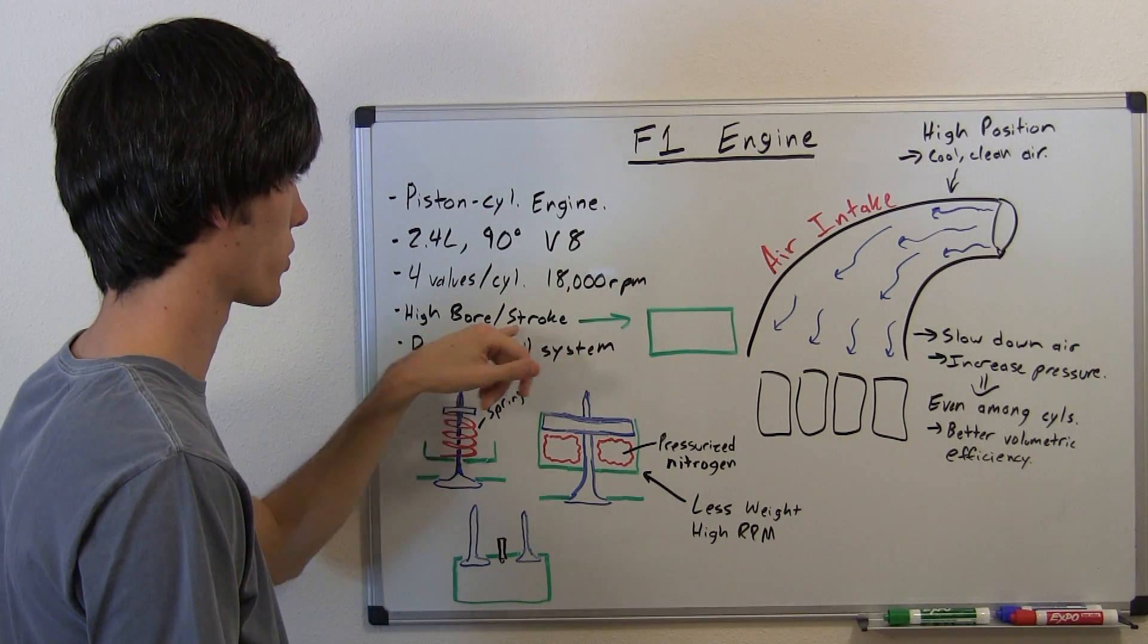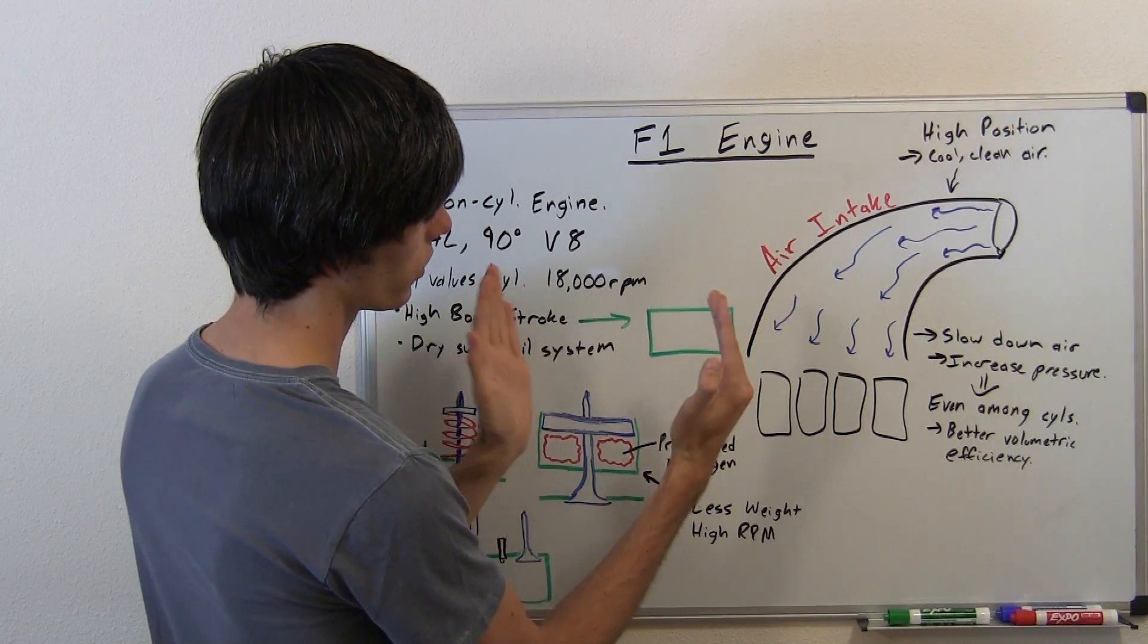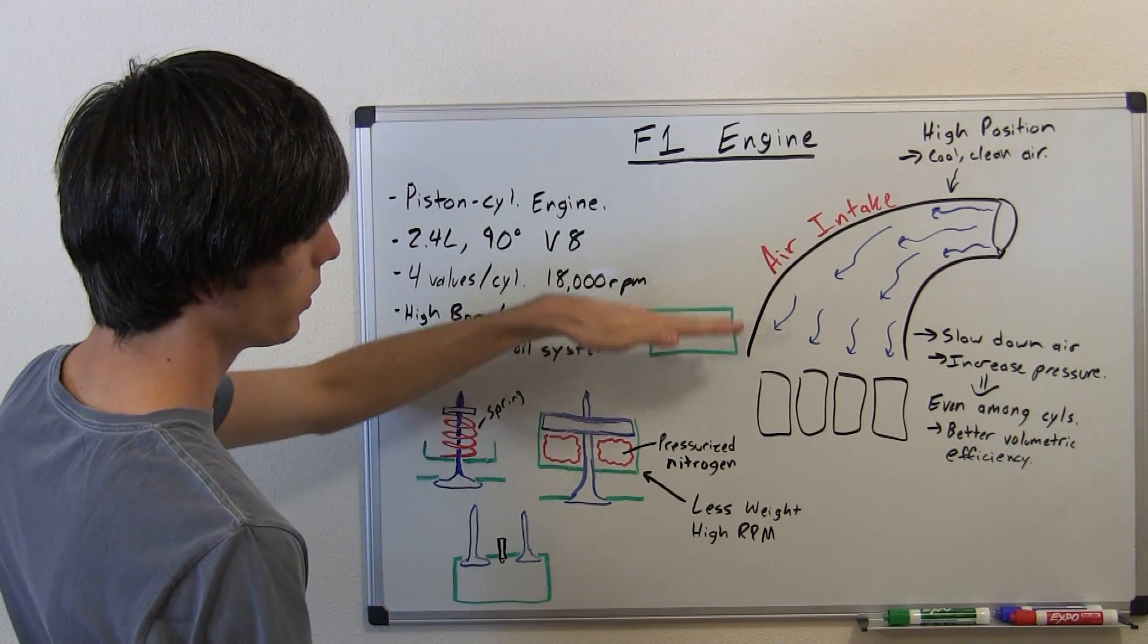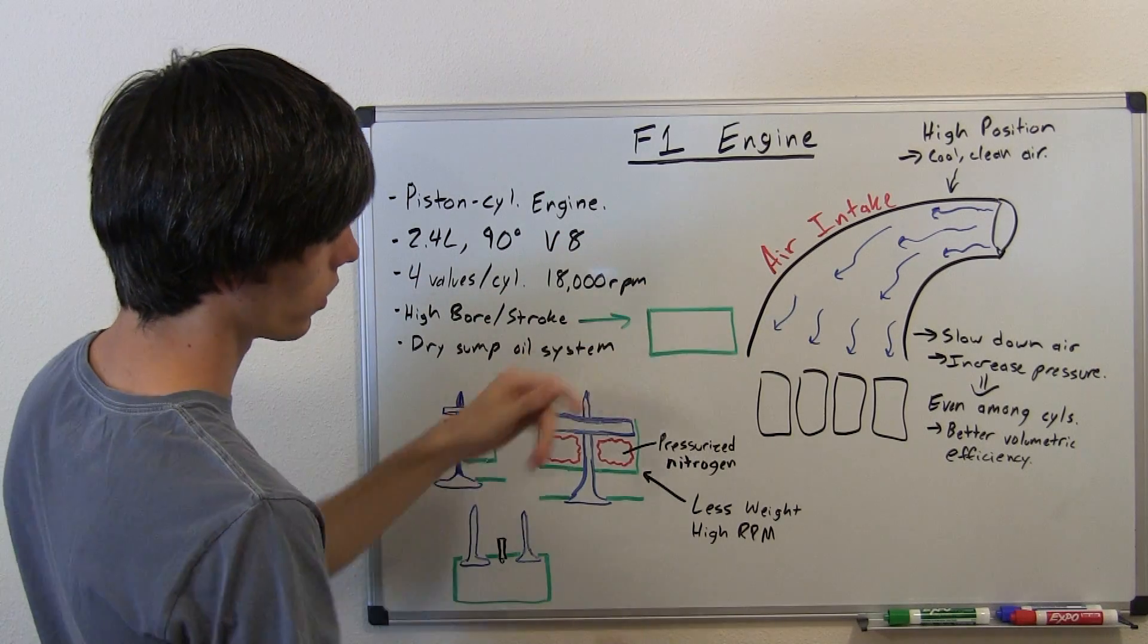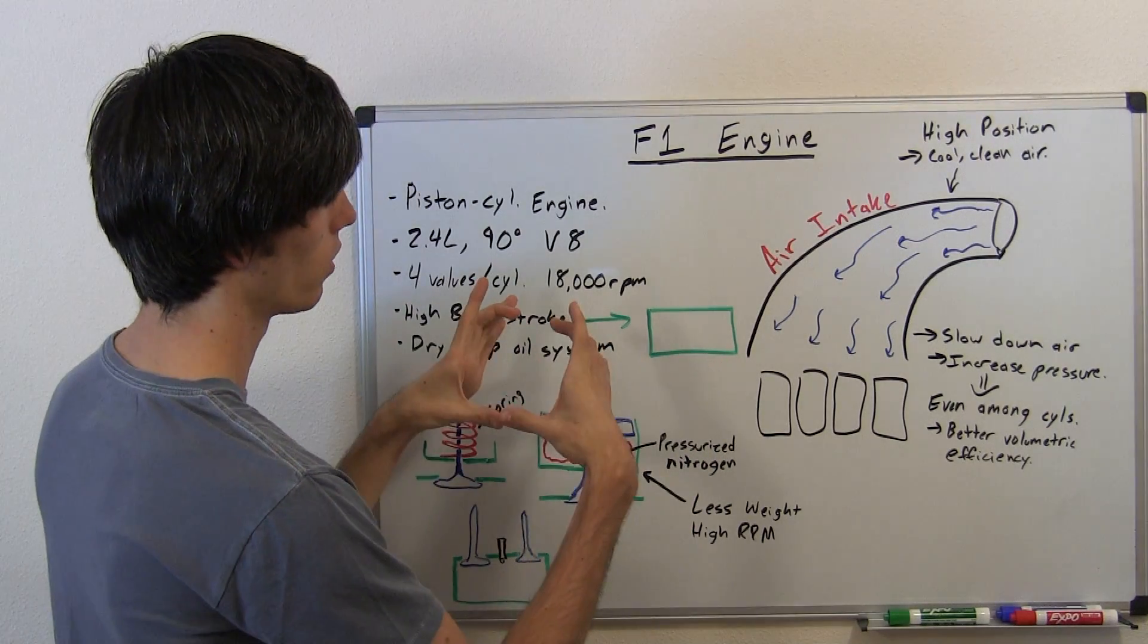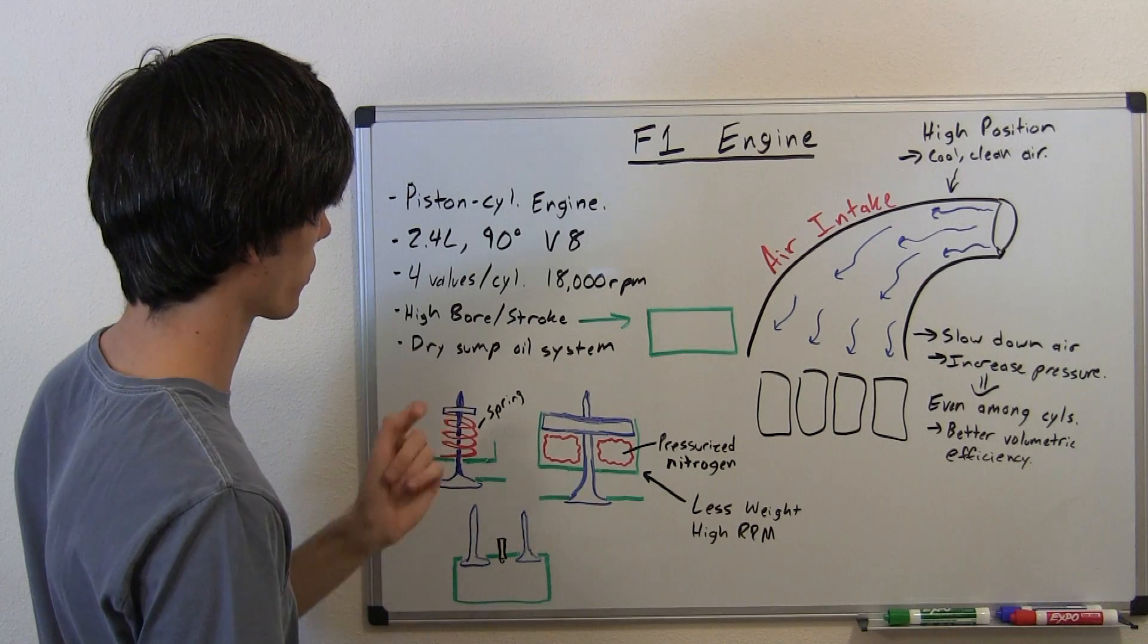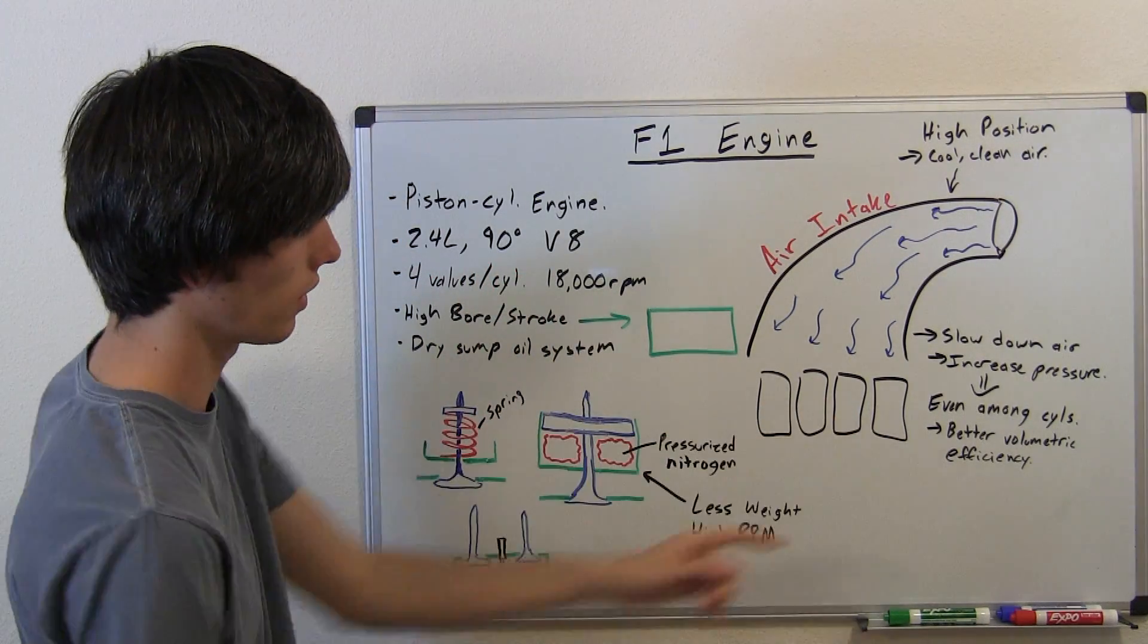So what enables a Formula One engine to rev to 18,000 RPM? Well it has to do with its bore to stroke ratio, which is very high, which means the cylinders are very wide and very shallow. So the piston doesn't have to move all that much between cycles per revolution. So in a typical car you may have a square bore stroke ratio or even a less than one bore to stroke ratio. So you kind of have something like this going on.